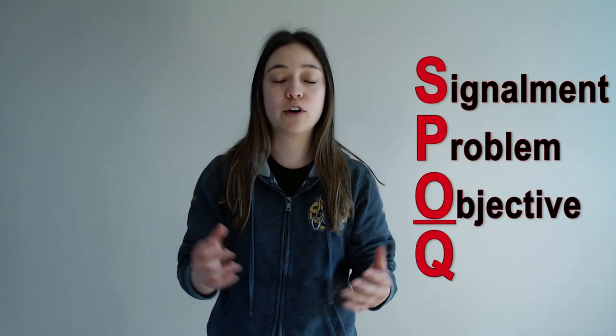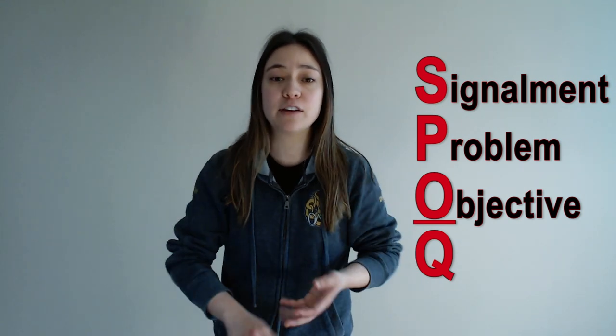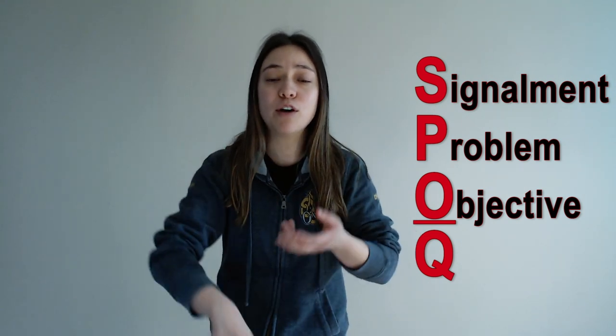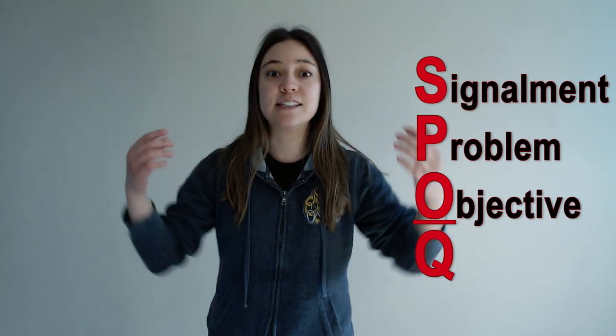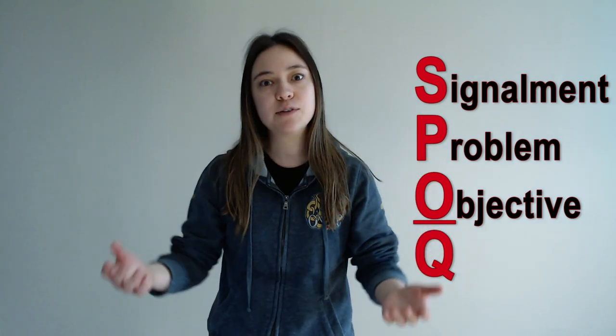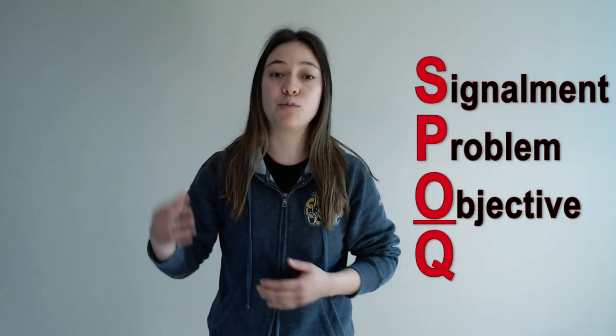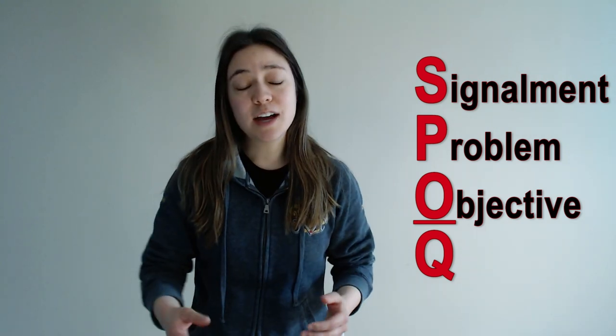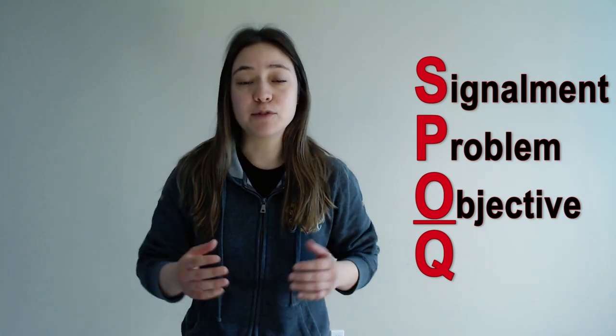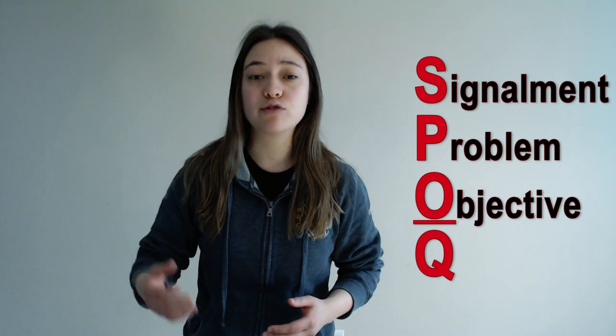The O in SPOC stands for objective — these are your objective findings. For example, on your physical exam, if you find lymphadenopathy, or the heart rate, respiratory rate, or temperature is elevated or decreased, you have to know what is normal and what is not normal so that you can figure out what's wrong with the animal. Identifying and highlighting the objective findings is super important when you're trying to answer the question correctly.